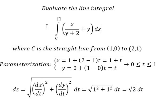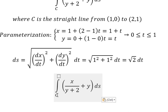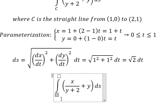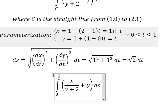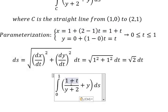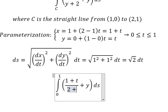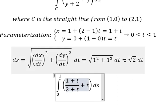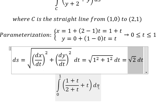Now this integral should be from zero to one. We substitute: x equals t, y equals t, and ds equals the square root of two dt.